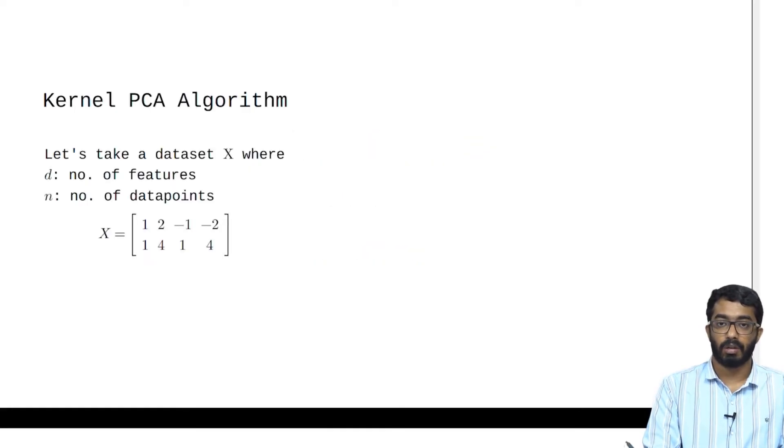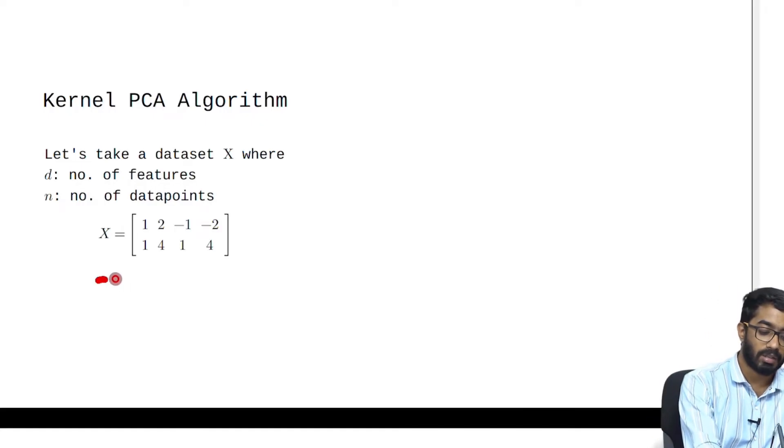Let's first focus on the kernel PCA algorithm itself. Let's take a data set X where D is the number of features and N is the number of data points. X is given by this matrix.